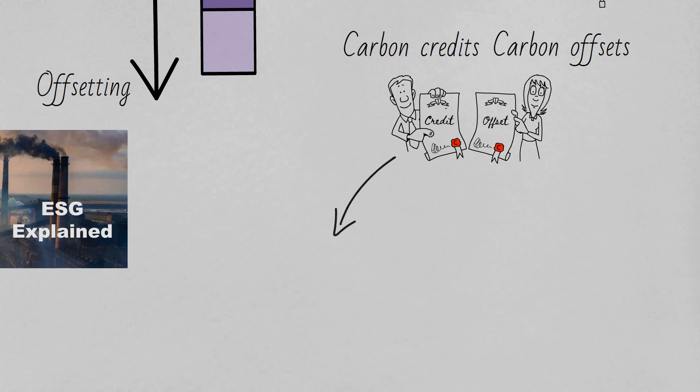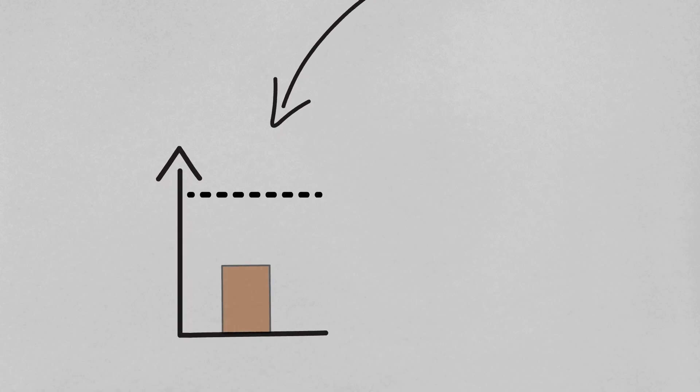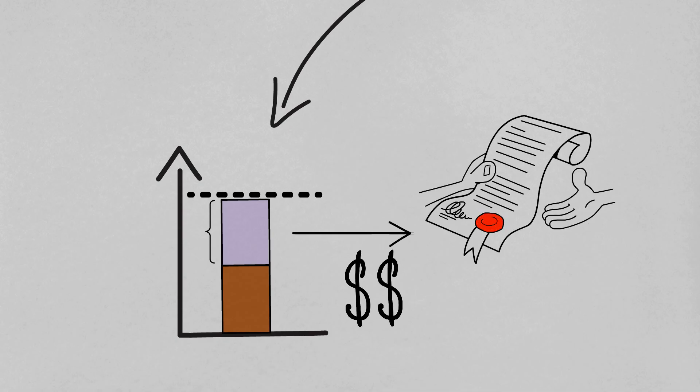For now, briefly, carbon credits arise where a company is permitted to release a certain amount of carbon under a cap and trade scheme that operates in certain jurisdictions, but they release less than this amount. This credit of under usage of a permitted carbon allowance can be bought and sold between market participants.